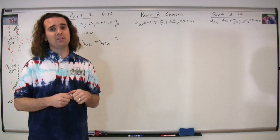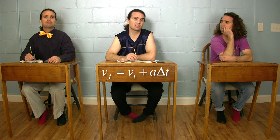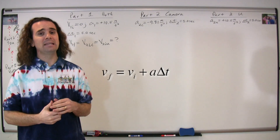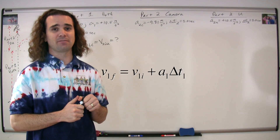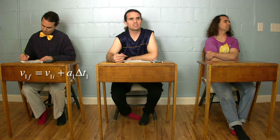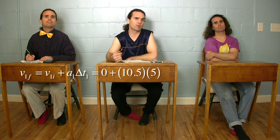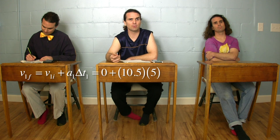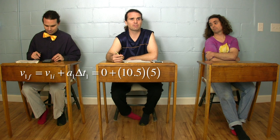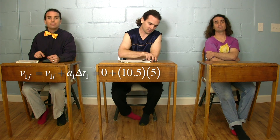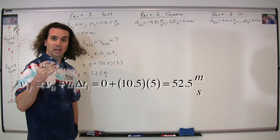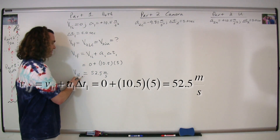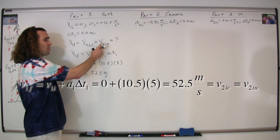Now we can actually start solving the problem. We start with the UAM equation for Part 1: velocity Part 1 final equals velocity Part 1 initial plus acceleration Part 1 times change in time Part 1. The velocity for Part 1 initial is zero, so velocity Part 1 final equals zero plus 10.5 times 5, which gives us 52.5 meters per second. We solved for this because the velocity Part 1 final is the same as the velocity Part 2 initial for the camera and the velocity Part 2 initial for you.